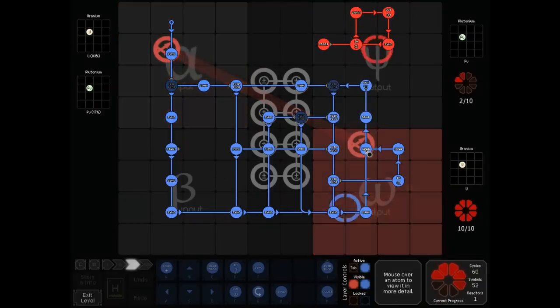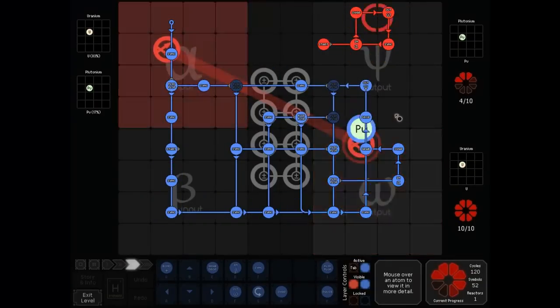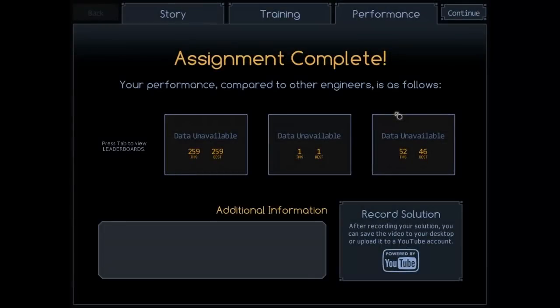All the uraniums get outputted here, and all the plutoniums get carried up into the next zone. 259 cycles. That is much faster than any method of physically separating these. Now I know it's cheating a little bit, but building a state machine I thought would be a cool challenge for people. So let's see some state machines that you guys have built.